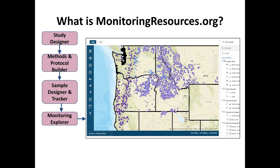We started to build online tools to support this collaboration and sharing of information. The main tool we built is called monitoringresources.org. You can go there, see the toolset, and understand what different information can be entered into it. We've built step-by-step processes for users to enter their study design — when they're sampling, where they're sampling, how they pick those sites, and their methods and protocols. We also built a tool to report back your design and how you've implemented it, so we know definitively where there's data on the landscape. And then we built a Monitoring Explorer toolset — a map viewer — which I'm going to talk about today and show you a live demo.